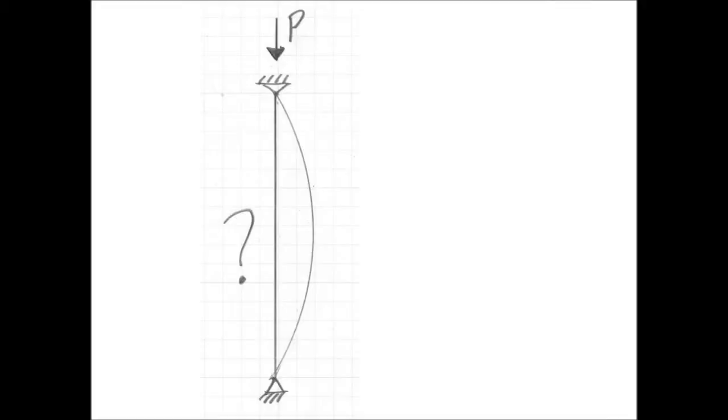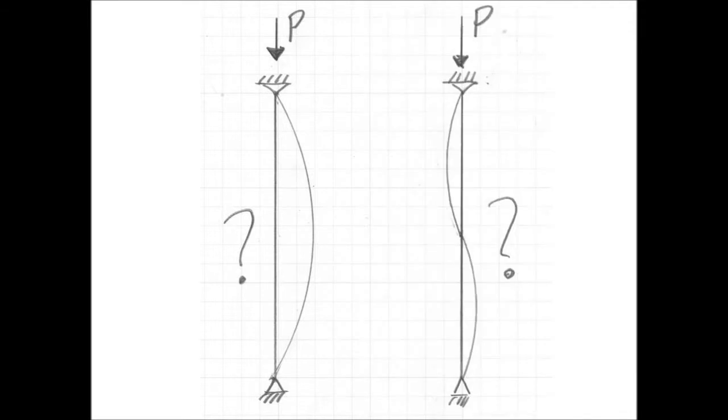For example, it is common for us to think of a simple pin-ended column as having an initial crookedness that would take a shape that would be roughly a half sine shape. But it is also conceivable that that initial crookedness of the column could take a full sine shape.